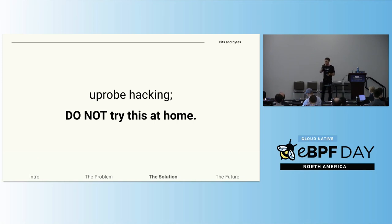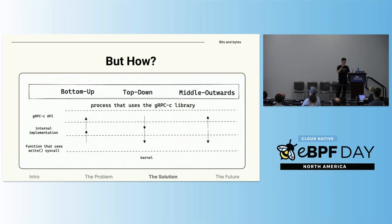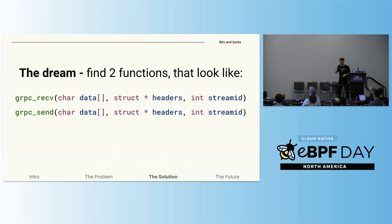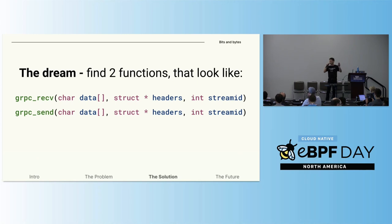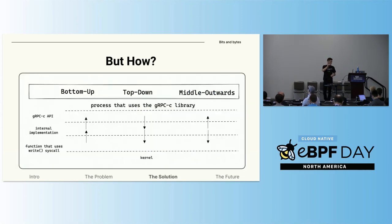So, let's see what uprobe hacking looks like. The first thing we are going to search for is the gRPC data — the most basic part of the protocol. Let's look for gRPC receive and gRPC send functions. Hopefully we will find functions that not only have access to the data, but also to the stream ID and to the headers, providing us with everything we need in just two probes. This is our dream right now.